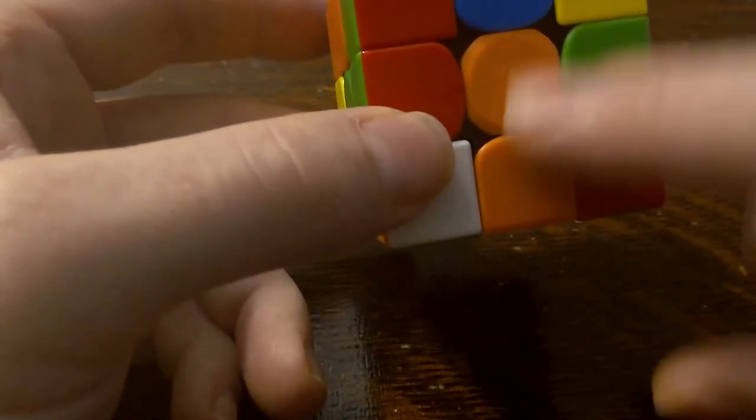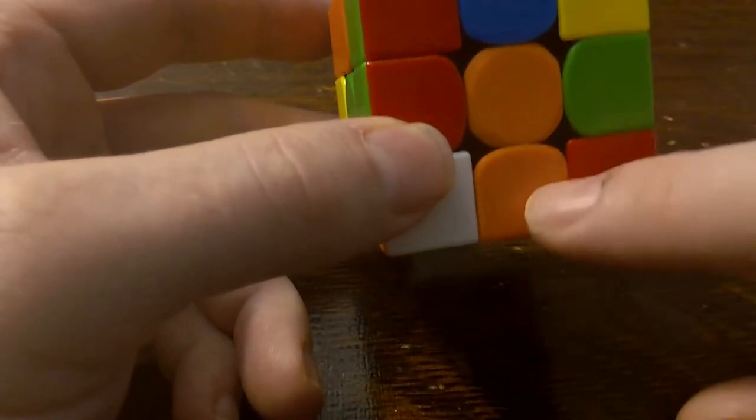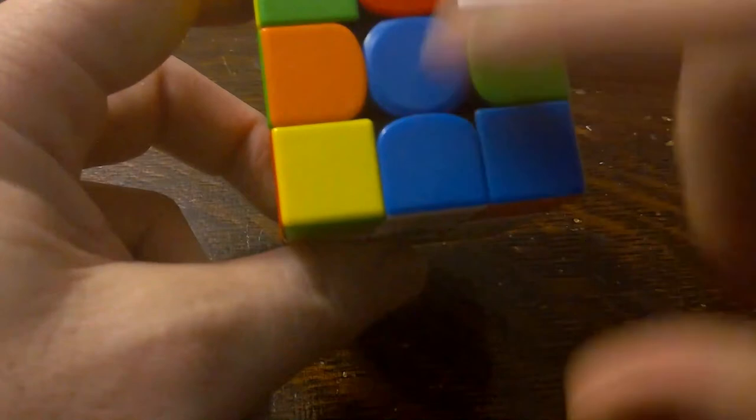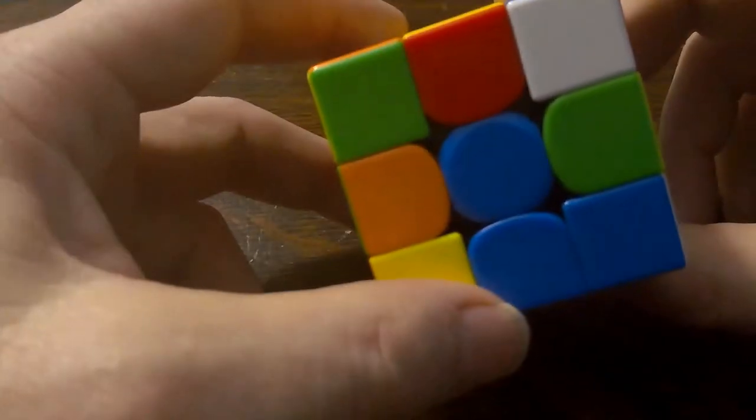So notice that I've got white, a white plus sign, and that the edge pieces match the center pieces, orange and orange, green and green, red and red, blue and blue. So by the end of the video, this is the goal. We want to be able to create the white cross with these edge pieces and center pieces matching.